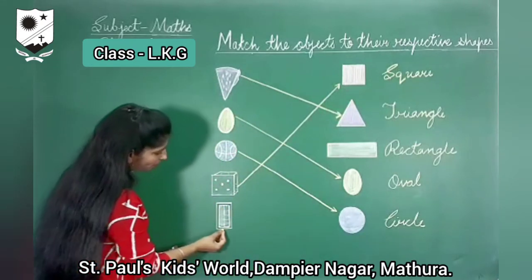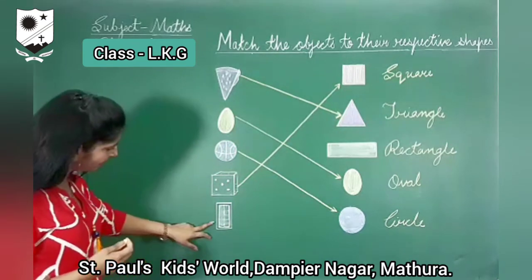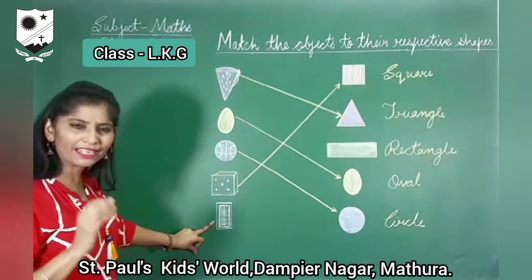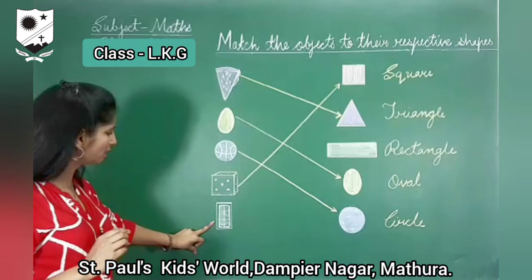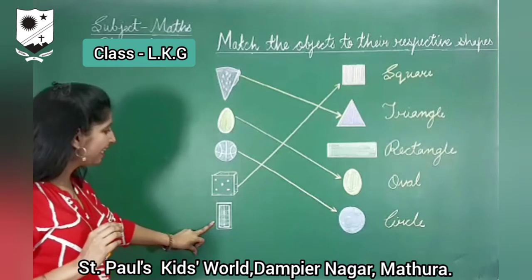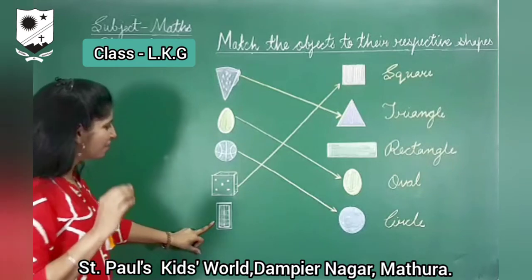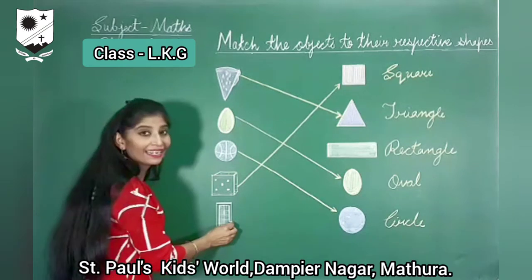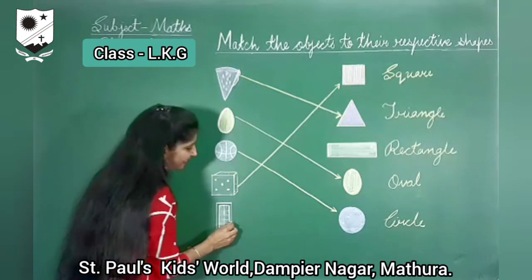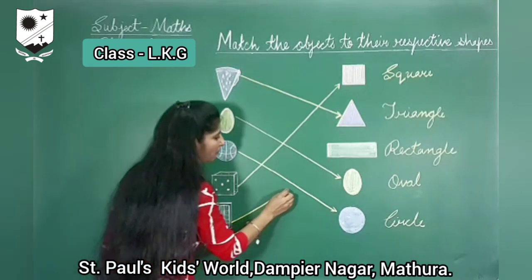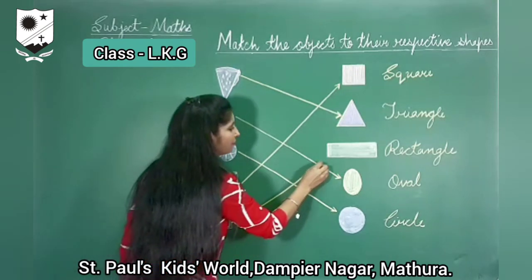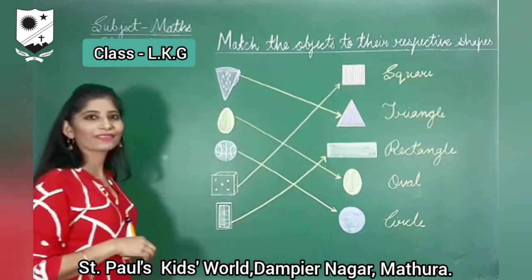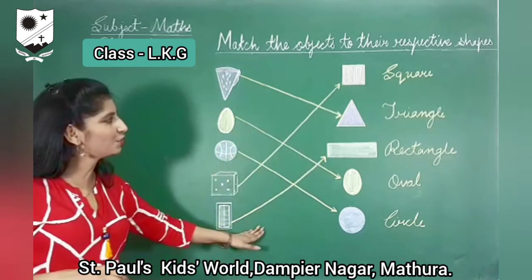Now what is this? This looks like a small mobile phone, I think. What you have to do? This looks like a rectangle. Match these objects with their respective shape. I hope you all understood.